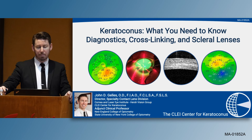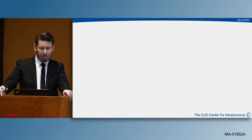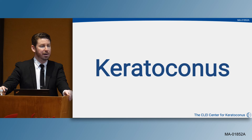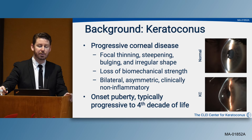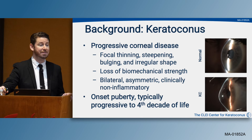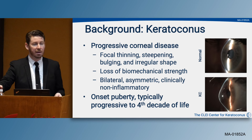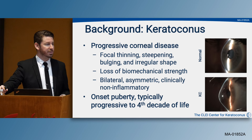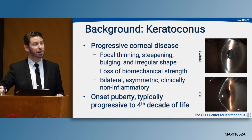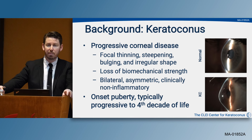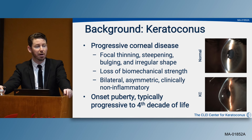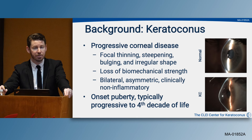Let me give you a little background on keratoconus. Keratoconus is a progressive corneal disease characterized by a loss of biomechanical strength. This loss of strength results in focal thinning, steepening, and irregular corneal topography. It's a bilateral, asymmetric, and clinically non-inflammatory disease that typically begins in puberty and continues until about the fourth decade of life, where it tends to stop progressing.